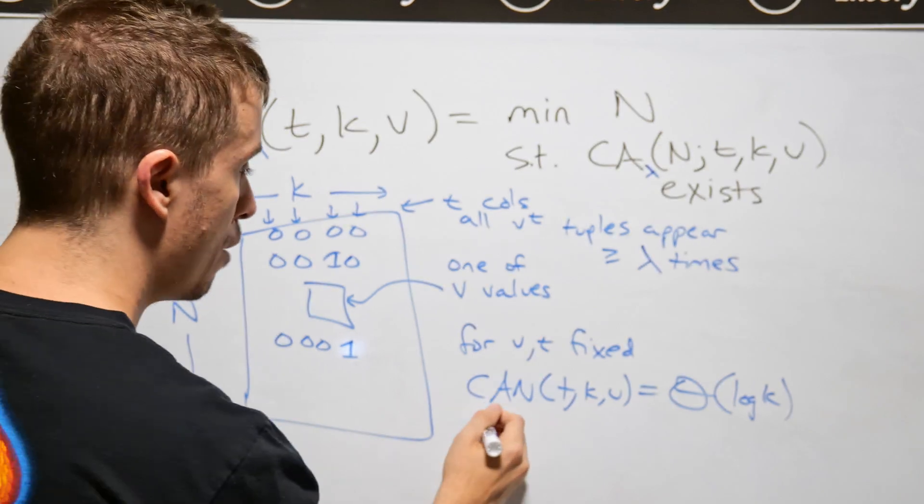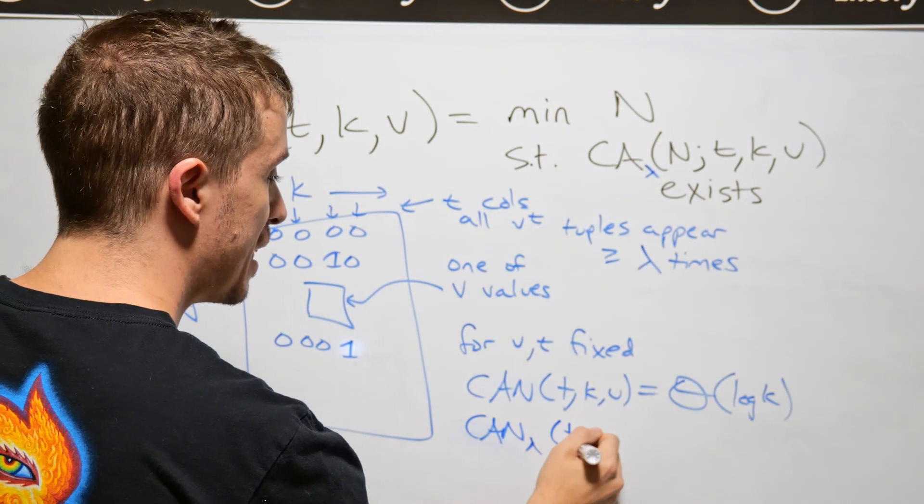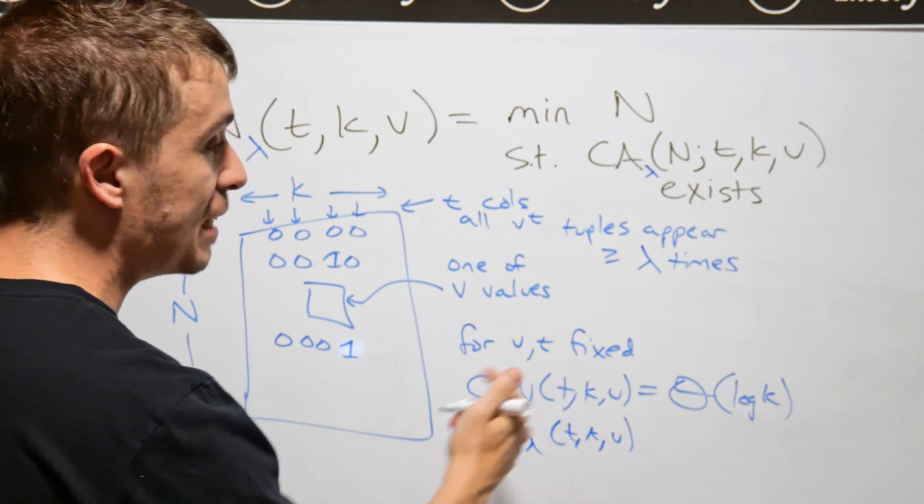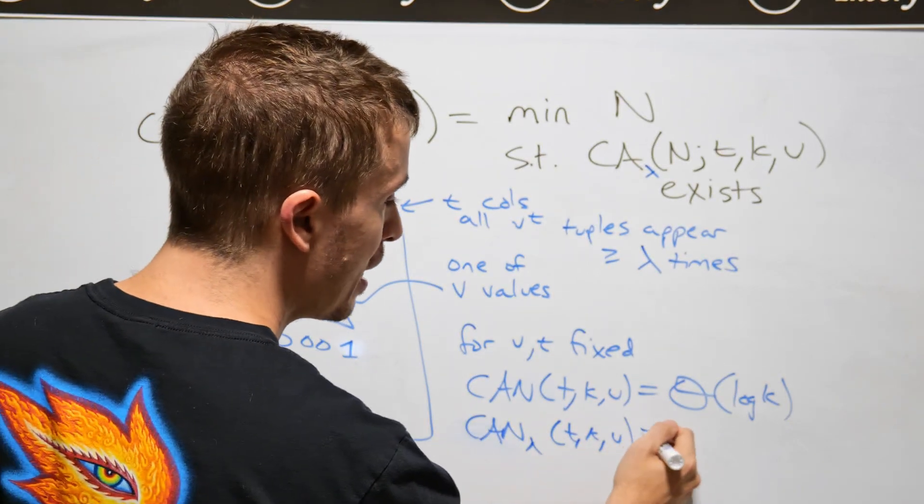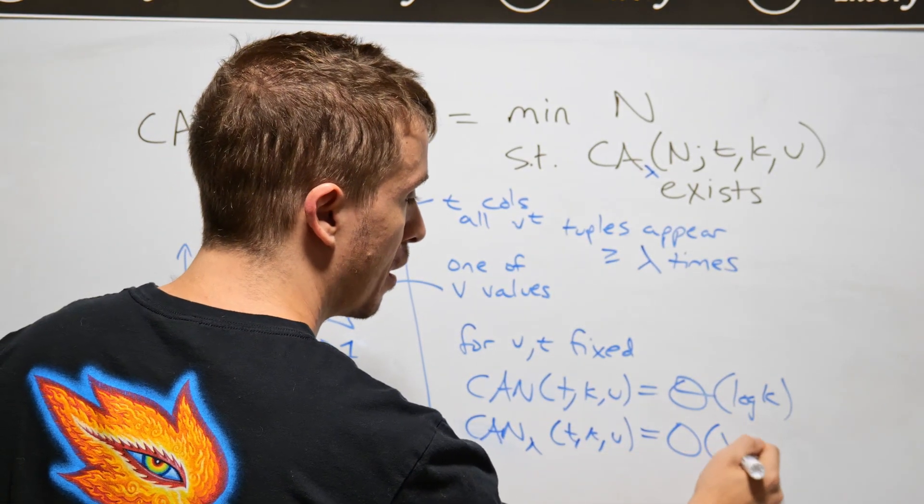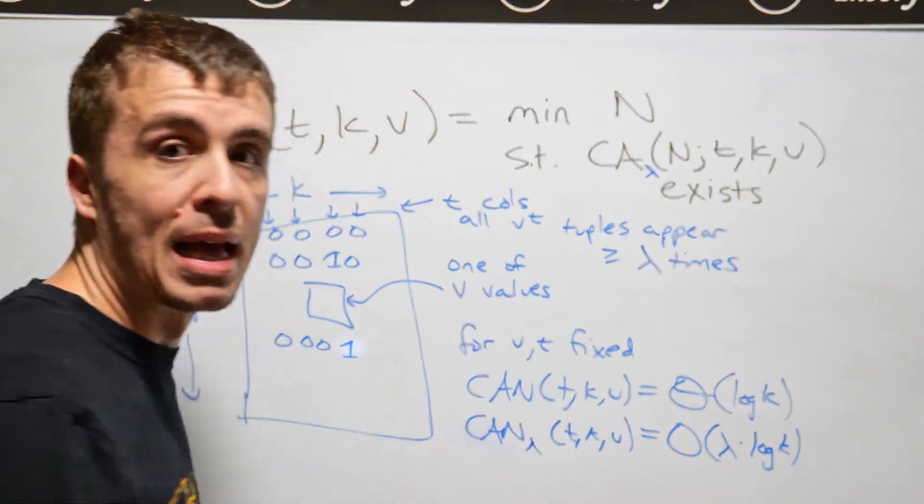So what I wanted to figure out was, what is CAN lambda t k v, where v and t are fixed? And it's pretty easy to show that it's lambda times log k or less.